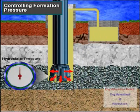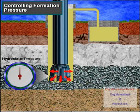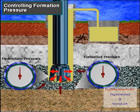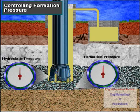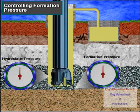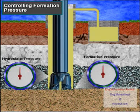The column of mud in the well creates pressure downhole, called hydrostatic pressure. The hydrostatic pressure of the mud column offsets formation pressure. Mud is the first line of defense in well control. As long as the hole is full of mud that is the right weight, the well cannot kick and perhaps blow out.